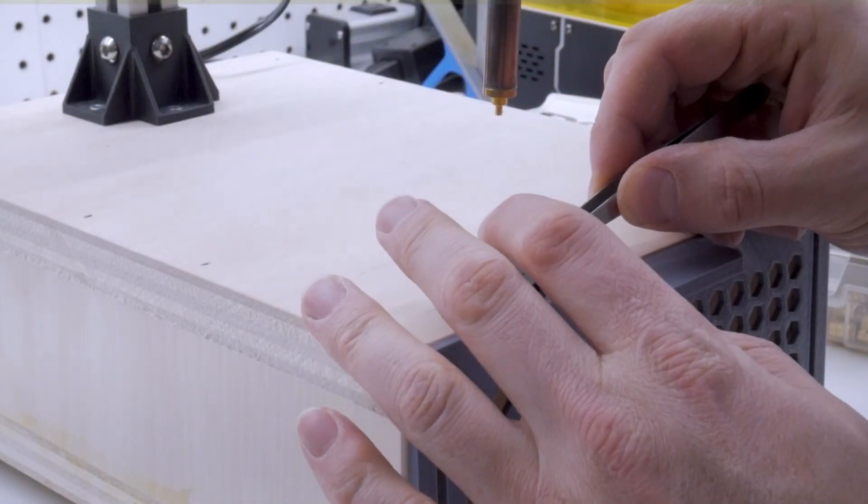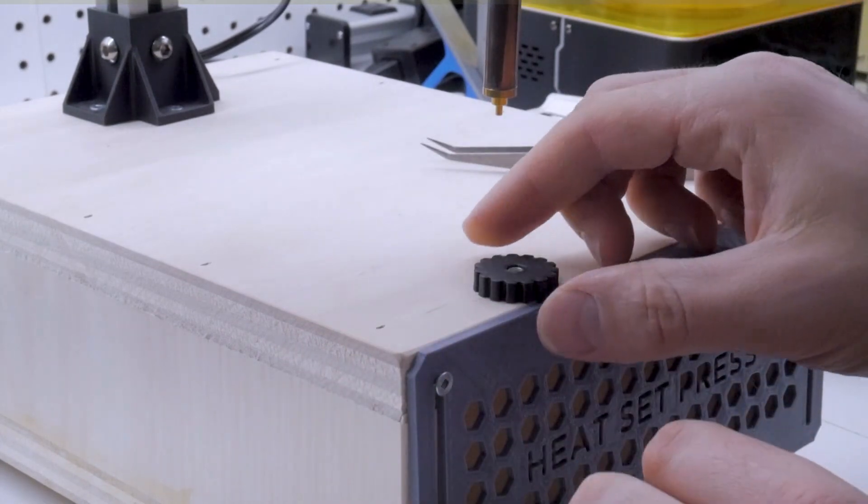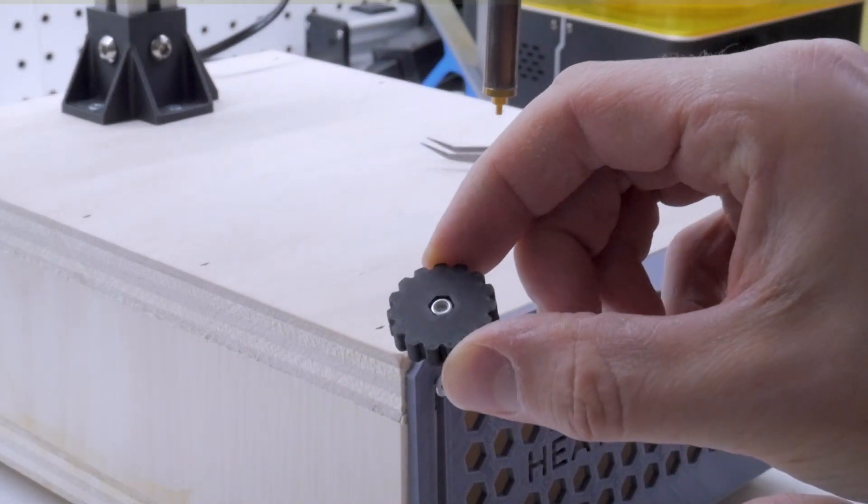Now we can take our M3 nylon locking nut and just press that into the recess in the back of the adjustment knob using your finger. No heat required for this process.